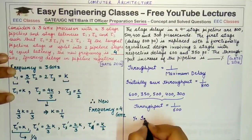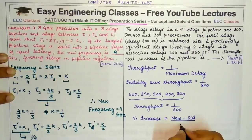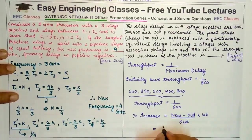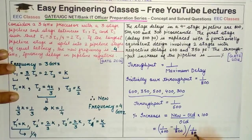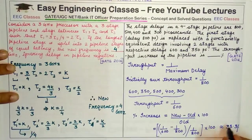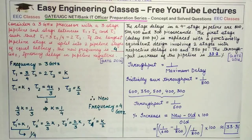The percentage increase = (new value − old value) / old value × 100 = (1/600 − 1/800) / (1/800) × 100 ≈ 33.3%. Be careful to write the answer to the required decimal places. The answer is 33.3%. Both questions involved direct formulas, and applying them correctly gives clear-cut marks in exams.